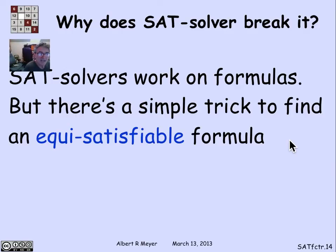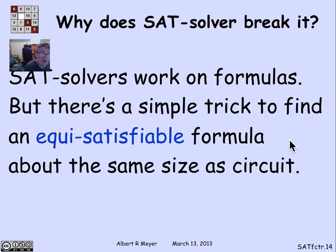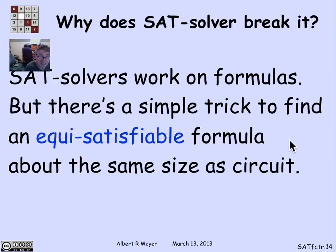So by assuming I can test satisfiability of formulas, I can therefore test satisfiability of circuits, and therefore I can factor. The circuit produces output 1 if and only if a formula of about the same size as the circuit is satisfiable — that's the last piece needed to completely reduce factoring to the satisfiability problem. And you can see this is actually a general method that will enable you to reduce most any kind of one-way function to a few SAT tests.